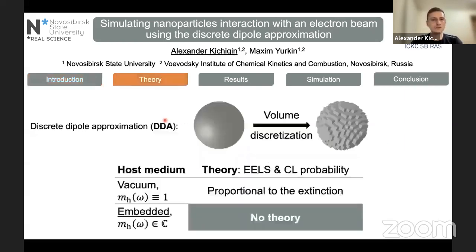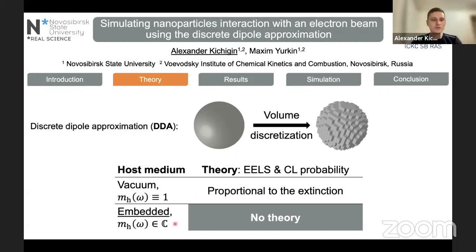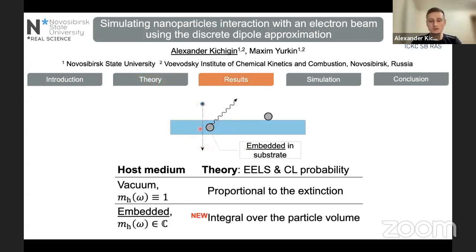We use the discrete dipole approximation in our work to simulate both EELS and cathodoluminescence. When we started our work, we found that there was only theory to simulate those processes for particles in vacuum, but particles are never truly in vacuum because there is always an electron and a substrate holding the particle. So we wanted to concentrate on the case of particles embedded inside the substrate. We derived theory to simulate the EELS and CL probability for particles embedded inside any host medium, including the Cherenkov radiation case and even an absorbing host medium.